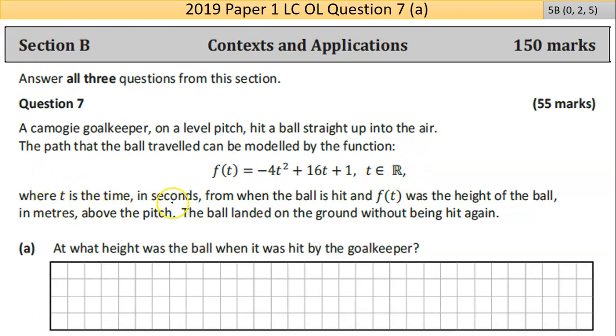t is time, measuring seconds from when the ball is hit. f(t) is the height of the ball in a given amount of time, so height is a function of time.